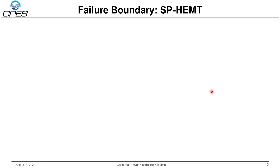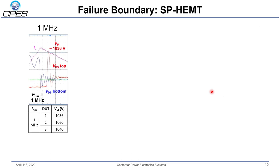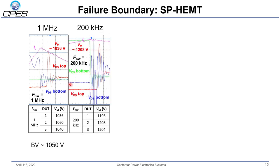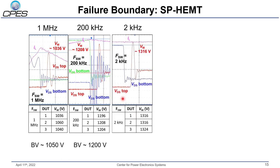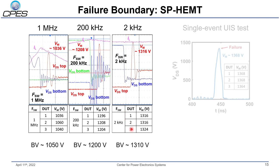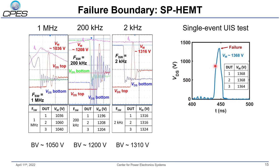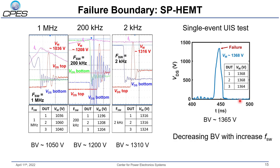The results are different for the SP-HEMT. At one megahertz, three devices to failure showed a breakdown voltage of around 1050 V. Decreasing the frequency to 200 kHz, the breakdown voltage increased to 1200 V. At two kilohertz, it further increased to 1310 V. And for the single event UIS test, the breakdown voltage further increased to about 1365 V. So there is a consistent decrease of breakdown voltage with increasing stress frequency for the SP-HEMT.